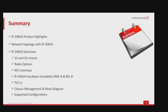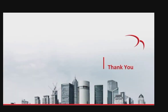As a summary, this module discussed the evolution of Saragon radio technology, the challenge of changing network paradigms, and an IP20N and IP20A overview with highlights of the radio terminals. Topics covered included one and two rack unit options, radio options, RFU interface, hardware scalability with RMCB and RIC-D, TCCU, chassis management and block diagram, supported radio configurations, and the latest innovation in capacity — the layer one link bonding option. Thank you for your attention.